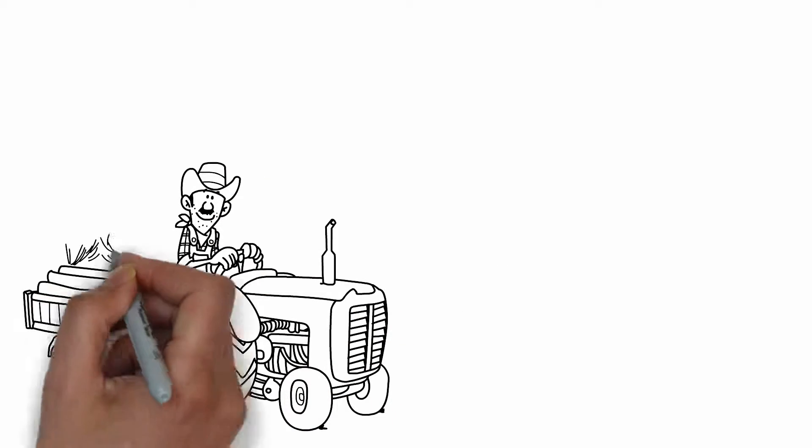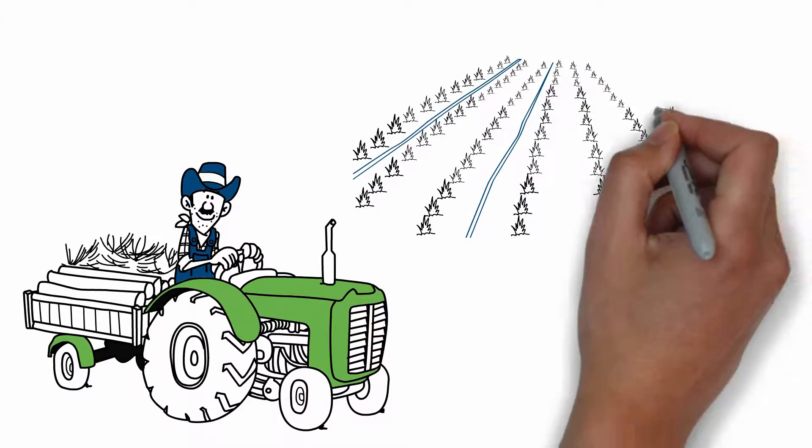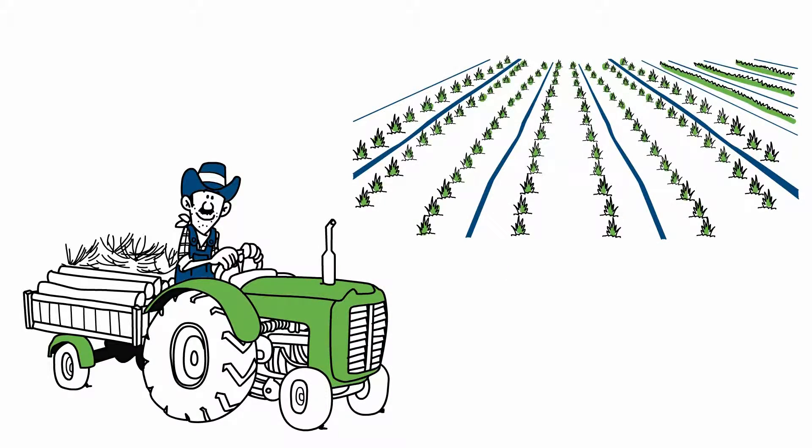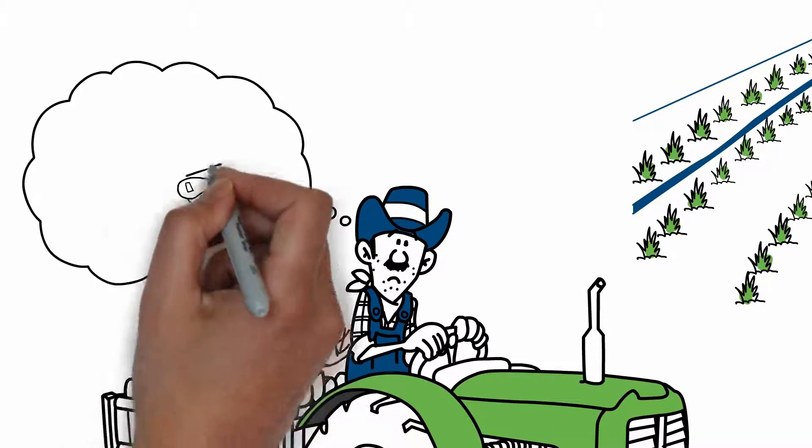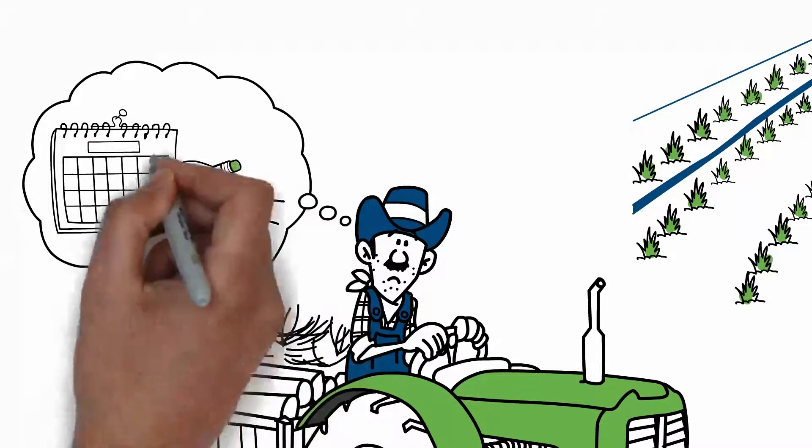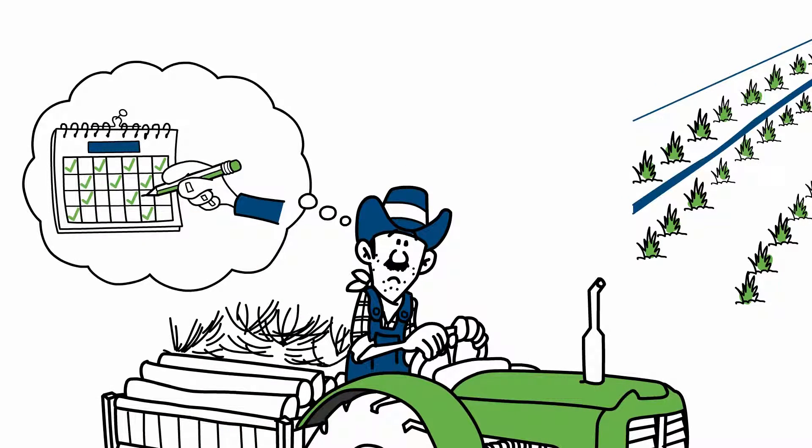So, you made the big move to drip irrigation. Congrats! That's a good-looking system there! And now, you need to schedule your irrigation. Looks like a big deal, but it really is simple.